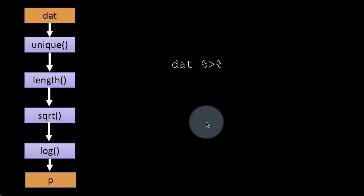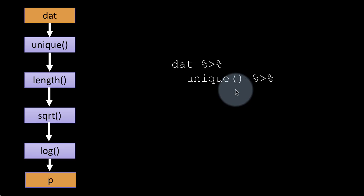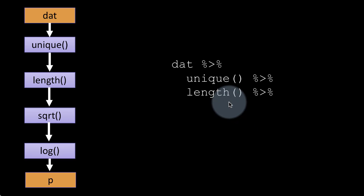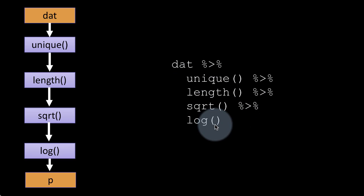The way to write the expression as a pipe is: dat %>% unique() %>% length() %>% sqrt() %>% log(). The first argument to each function in the pipe is always what is coming along the pipe. So dat is implicitly the first argument to unique; the result of unique is the first argument to length; the result of length goes to sqrt; and the result of sqrt goes to log. That's the whole pipe.